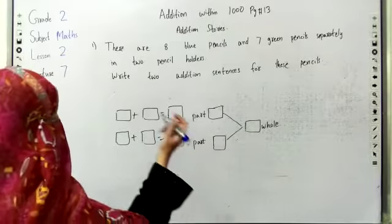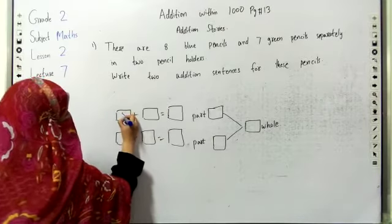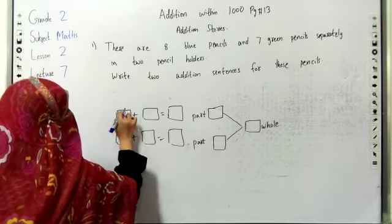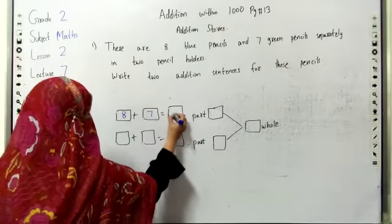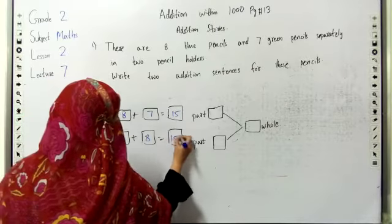We have the addition sentences. So we will write: eight plus seven is equal to fifteen, and seven plus eight is equal to fifteen.